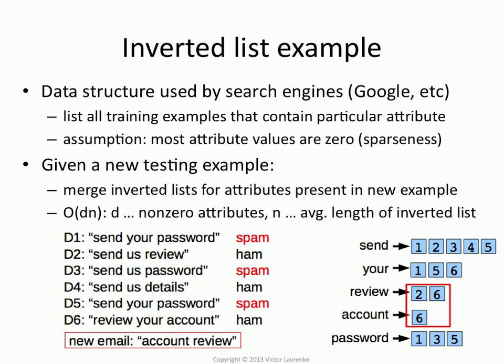At testing time, when you get a new example — say 'account review' — you can very quickly compute the set of nearest neighbors. You take 'account,' look up its inverted index: 'count' only occurs in instance number 6. 'Review' occurs in instances 2 and 6. So I know that my nearest neighbors must be 2 and 6. I just need to compute the distance between the testing example and document 2 and document 6.